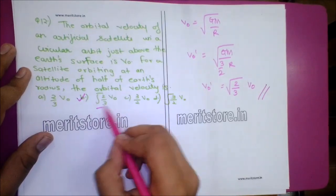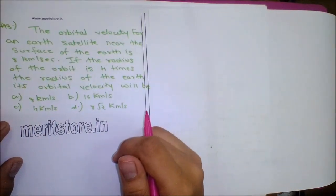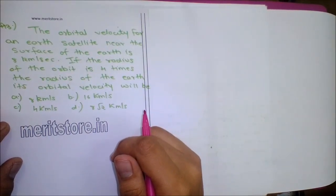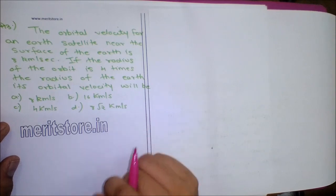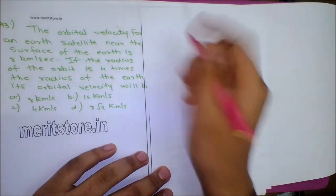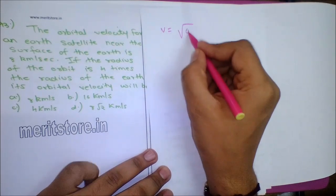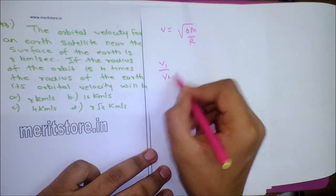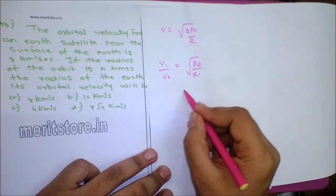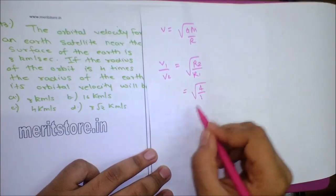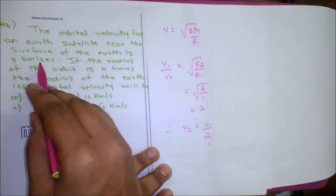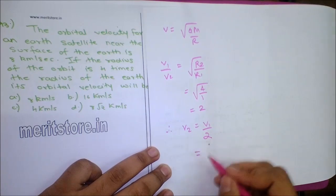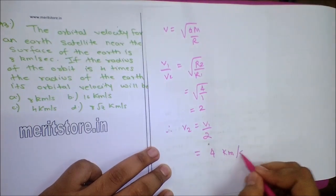Question 13: The orbital velocity of an Earth satellite near the surface is 8 km/s. If the radius of the orbit is 4 times the radius of the Earth, the orbital velocity will be: V = √(GM/R), so V1/V2 = √(R2/R1) = √(4/1) = 2. Therefore V2 = V1/2 = 8/2 = 4 km/s. Option C is the correct answer.